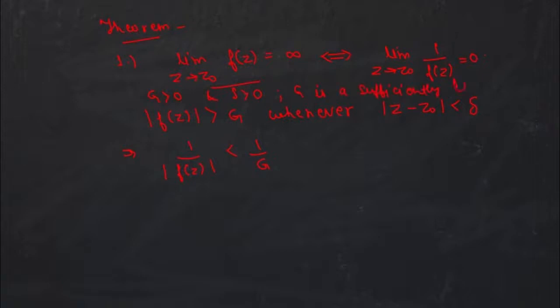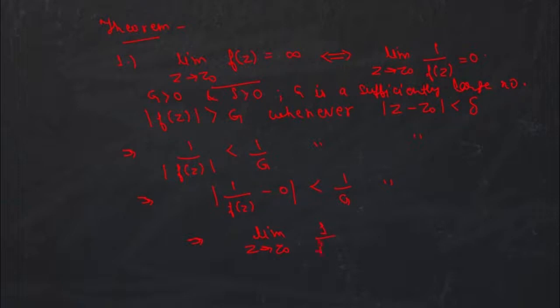This means that |1/f(z)| is less than 1/g, where g is a sufficiently large number, so 1/g will be a sufficiently small number. Whenever this happens, it means that |1/f(z) − 0| is less than 1/g whenever |z − z₀| is less than δ. So this means that the limit as z approaches z₀ of 1/f(z) is 0, by the definition of the limit.